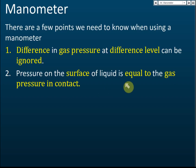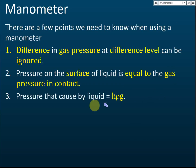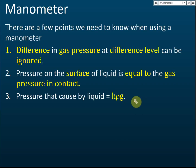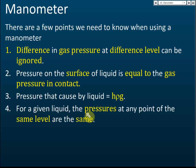Second, the pressure on the surface of a liquid equals the gas pressure in contact with it — whether that's methane, oxygen, or any other gas. Third, the pressure caused by a liquid is given by h·ρ·g. Use this formula when you want the answer in Pascals. If you only want the answer in cm Hg, you do not need this formula.